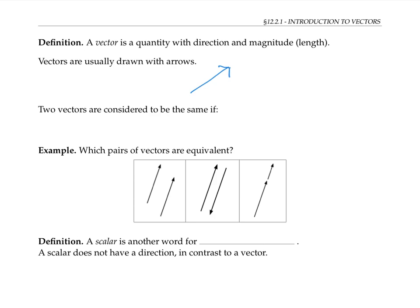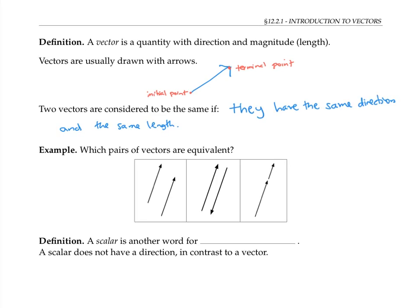The tail end is called the initial point, and the tip of the arrow is called the terminal point. Two vectors are considered to be the same if they have the same direction and the same length. Please pause the video and decide, for each pair of vectors, whether the two vectors are equivalent.